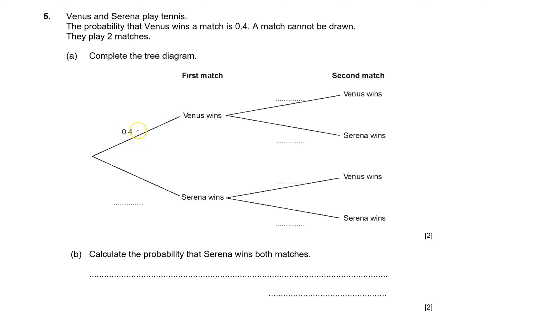So the probability that Venus wins the first one is 0.4, so therefore the probability that Serena wins, because it's absolutely certain that either Venus or Serena wins, must be 0.6.